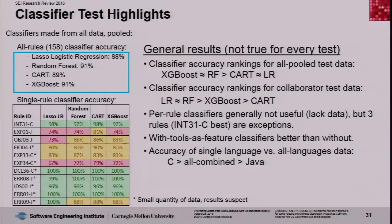Back to general results: classifiers with tools as a feature were better than without. That's significant because our research is notable in using multiple static analysis tools. Lastly, the accuracy of single-language versus all-languages data showed that classifiers built only with C language alerts had better accuracy than all languages combined, which was better than Java only.